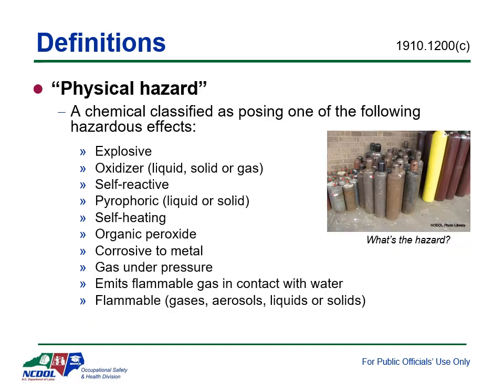A physical hazard is a chemical classified as posing hazardous physical effects. For example, explosives — substances that can undergo a rapid chemical reaction producing large amounts of gas and heat, leading to potentially fatal injuries or death. Oxidizing agents are substances that supply oxygen to a fire, helping it burn and making fires spread — especially dangerous in enclosed spaces. Flammable materials can easily catch fire and burn, and can be in the form of liquids, gases, aerosols, or solids. They are often found in our daily lives, so it's important to be cautious when handling them.